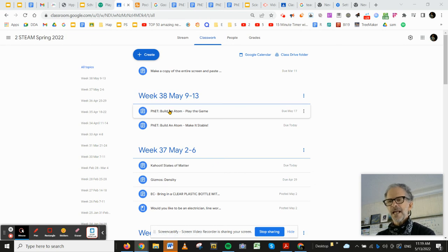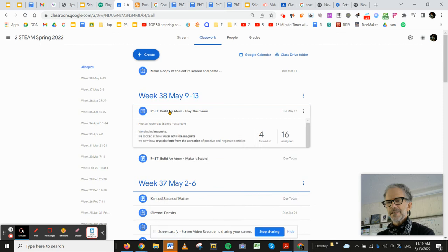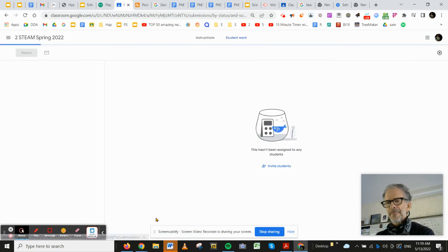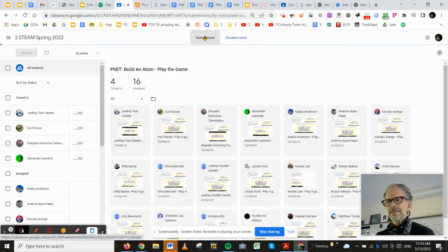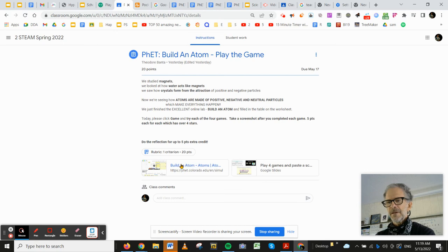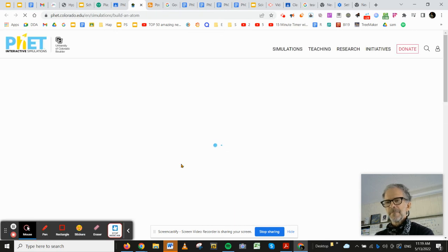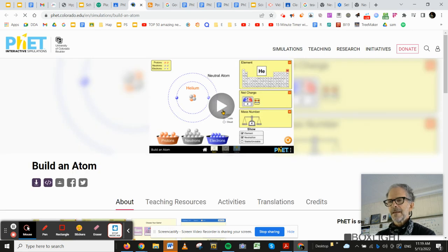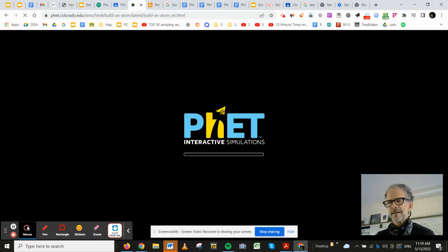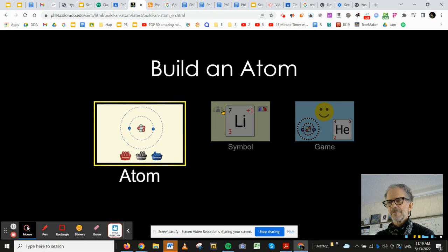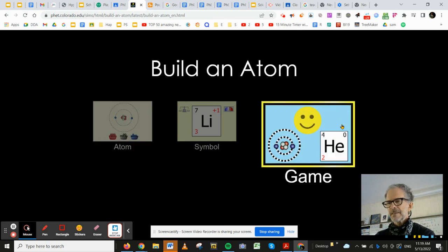What you need to do is go to your Google Classroom, click on the assignment, view the assignment, click the Build an Atom, click that arrow, and click Game.